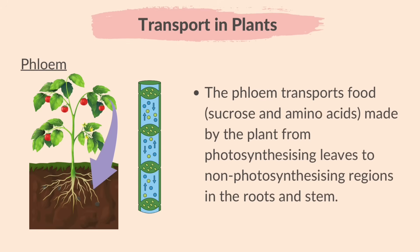The phloem transports food — that is sucrose and amino acids — made by the plant from photosynthesizing leaves to non-photosynthesizing regions in the roots and stem. A helpful way to remember which tube carries which: phloem starts with the 'f' sound, and so does food.